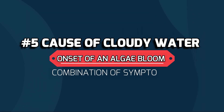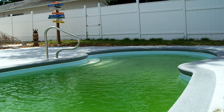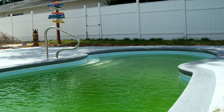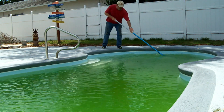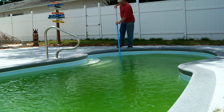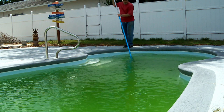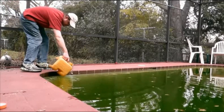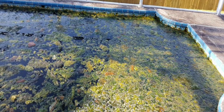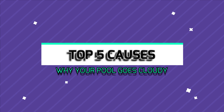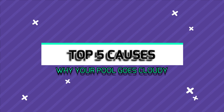Number five on our list is an early sign of an algae bloom. Let's hope this isn't it. If it is, I'll leave a link below to a video I did on how to clear up your green or cloudy pool. An algae bloom can sometimes happen, but if it does, you'll be armed with the knowledge on the best way to tackle the issue. Those are the five most common causes of why your pool can go cloudy.